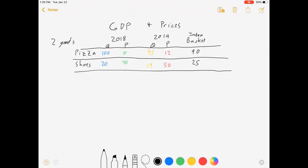Hi, welcome to my video on GDP and prices. What we're gonna do here is look at calculating nominal and real GDP in this toy economy with only two goods: pizza and shoes. Basically quantities changed, prices changed.